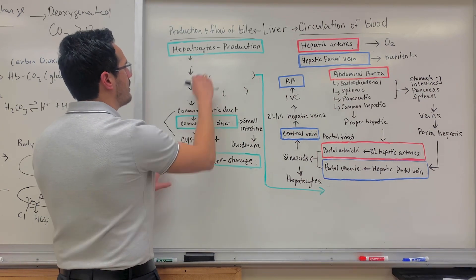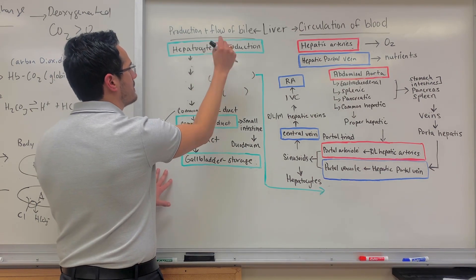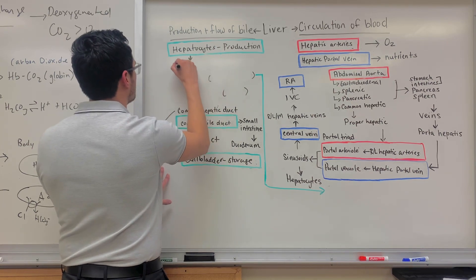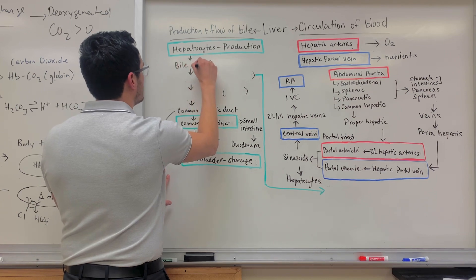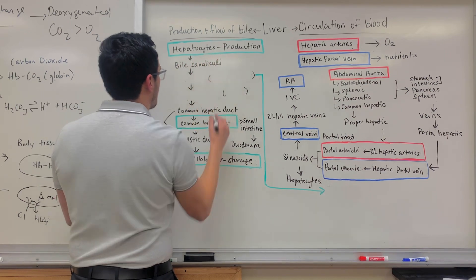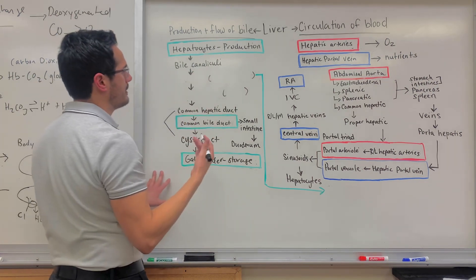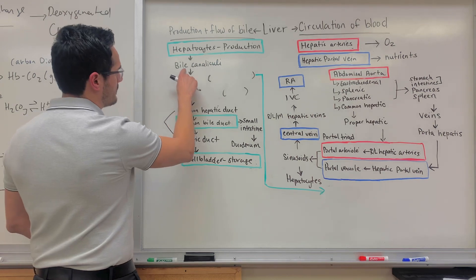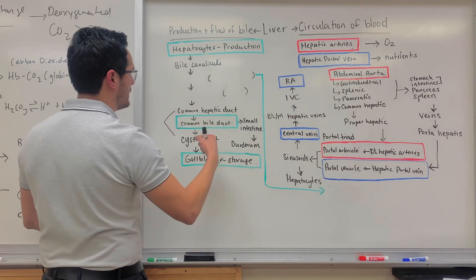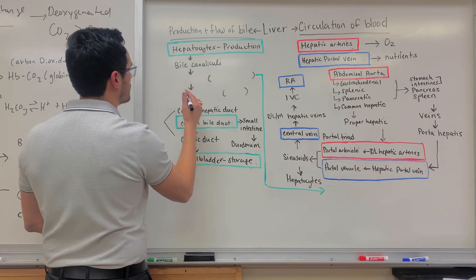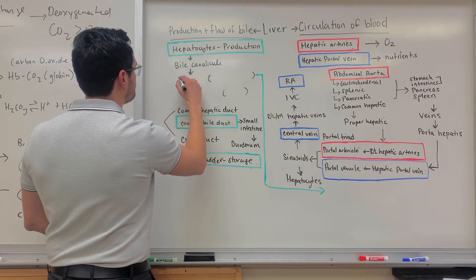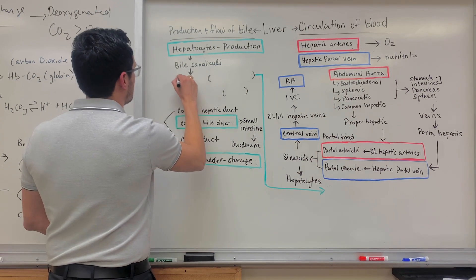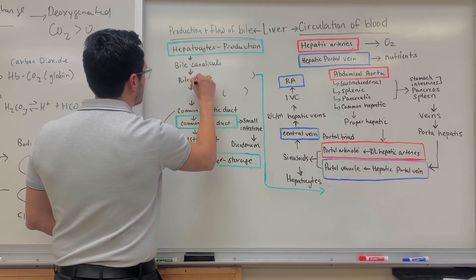Okay, so now we're going to backtrack. So I've already said that the hepatocytes produce the bile. Well, the bile travels through what's known as the bile canaliculi. And this is something that we identified on the liver microanatomy. So after you get from the bile canaliculi, it'll then travel to a particular structure, which is what's known as the bile duct.